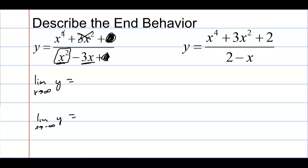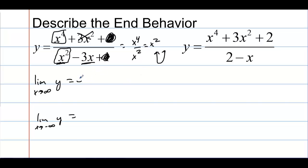This doesn't matter compared to x to the fourth. So now we're looking at x to the fourth over x squared — and this is just for end behavior. You can't arbitrarily throw things out; only when talking about end behavior. This reduces to x squared. x squared graphs like a parabola, so y is going to infinity on both the right and the left of this function.